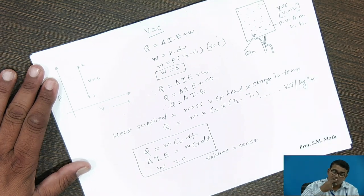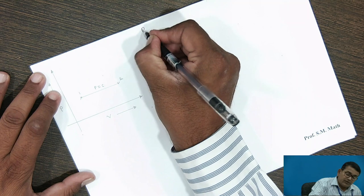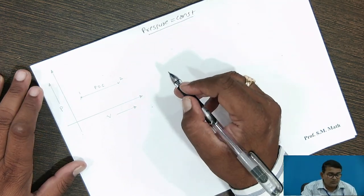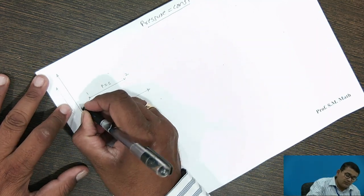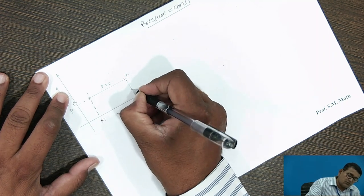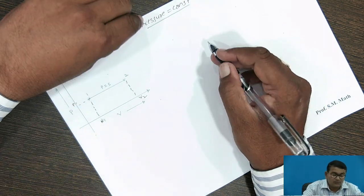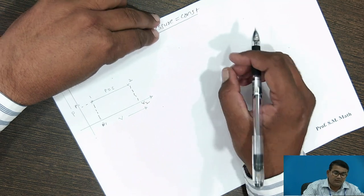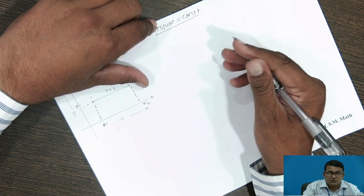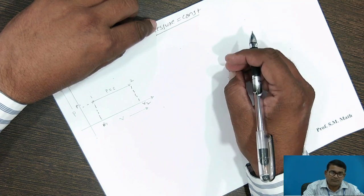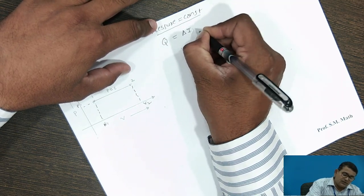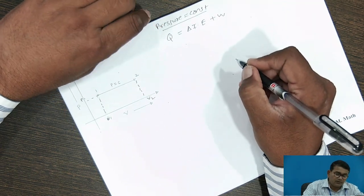Next process: pressure remains constant. As shown in the previous graph, pressure P1 is equal to P2, and volume goes from V1 to V2. Whatever quantity of heat is involved, part of that heat is utilized to do work and part is utilized to increase the internal energy of the system. By the first law of thermodynamics, Q is equal to change in internal energy plus work done.